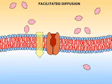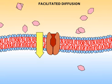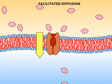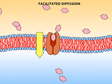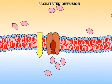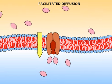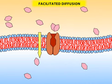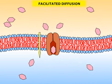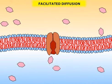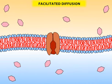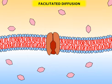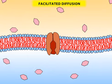Some membrane proteins act as carriers that bind a molecule on one side of the membrane, change shape, and then deposit the molecule on the other side of the membrane. In this example of facilitated diffusion, a glucose carrier protein moves glucose down its concentration gradient, a process that requires no energy.